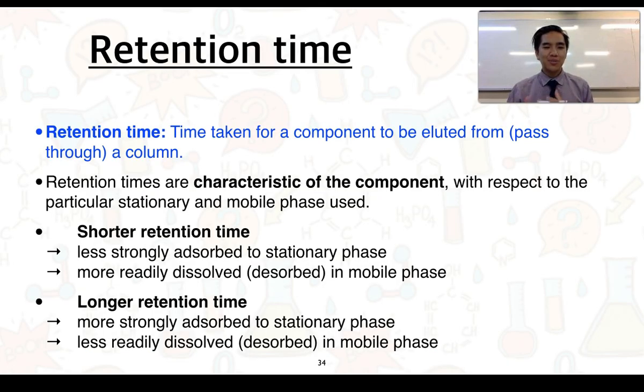Let's come back to retention time. Retention time is defined as the time taken for a component to be eluted from or to pass through a column. Retention times are also going to be characteristic of the component with respect to whatever stationary and mobile phase that you use. If a substance has a shorter retention time, we can say it's less strongly adsorbed to the stationary phase and or it's more readily dissolved into the mobile phase. In contrast, longer retention times mean they are more strongly adsorbed to the stationary phase and less readily dissolved or desorbed in the mobile phase.